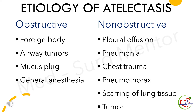There are two types of etiologies: obstructive and non-obstructive. If it occurs from a blocked airway, this is called obstructive. If it occurs from pressure outside the lungs, it is known as non-obstructive atelectasis. Common etiologies of obstructive atelectasis are foreign bodies, airway tumors, mucous plug, and general anesthesia. Common examples of non-obstructive atelectasis are pleural effusion, pneumonia, chest trauma, pneumothorax, scarring of lung tissue, and tumors.